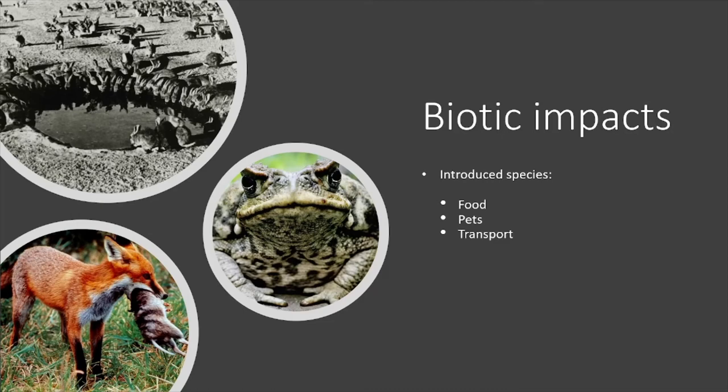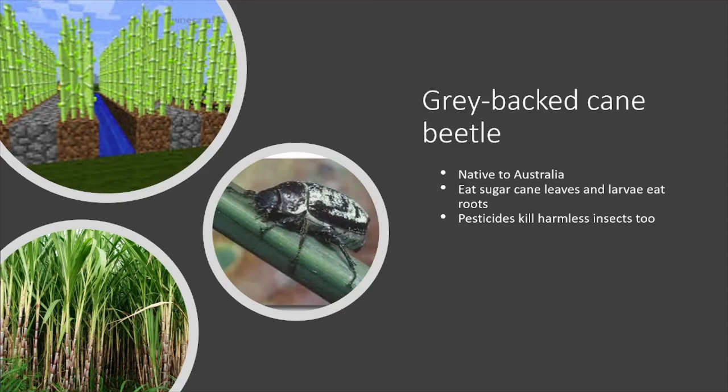Moving on to biotic impacts — these are usually introduced species, things that weren't already within the ecosystem. Humans have introduced species as food, pets, and for transport. One example is the grey-backed cane beetle, which is actually a native beetle to Australia. It eats sugar cane leaves and its larvae eat the roots. Pesticides kill harmless insects as well as the grey-backed cane beetle, so the idea was to avoid using pesticides.